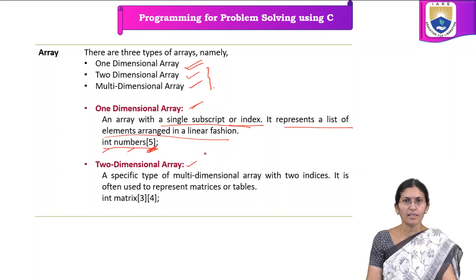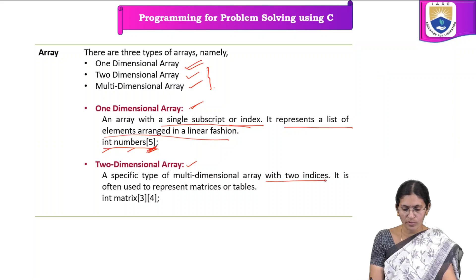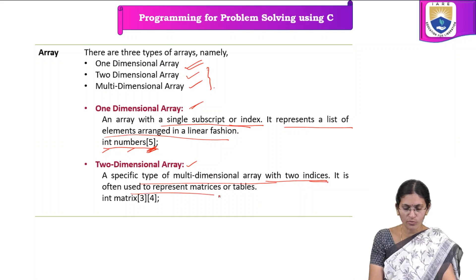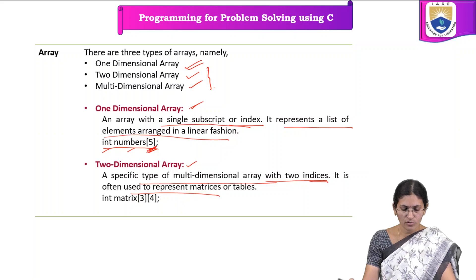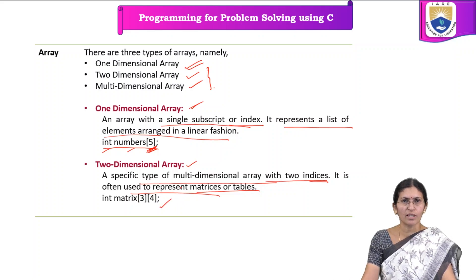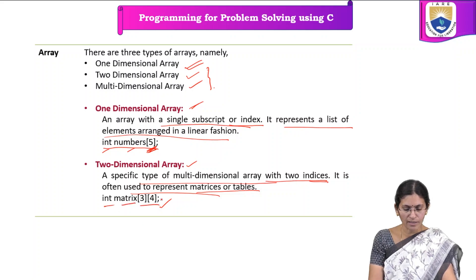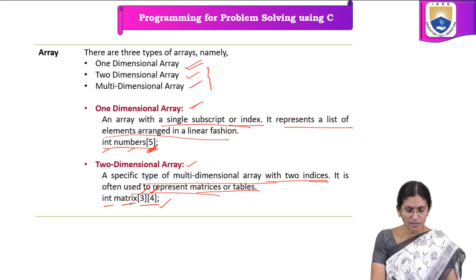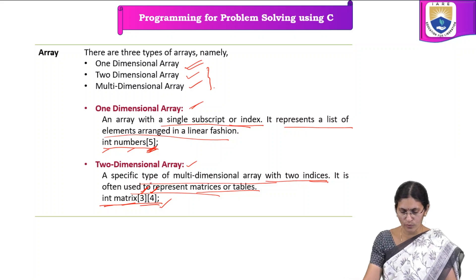Coming to 2-dimensional array — a 2-dimensional array is an array of 1-dimensional arrays. It has 2 indices and is a specific type of multi-dimensional array. It is used to represent matrices or tables. Whenever we need to represent information in the form of a matrix, we use a 2-dimensional array. The declaration specifies data type, name, number of rows, and number of columns — for example, a 2-dimensional array of size 3 by 4, meaning 3 rows and 4 columns.